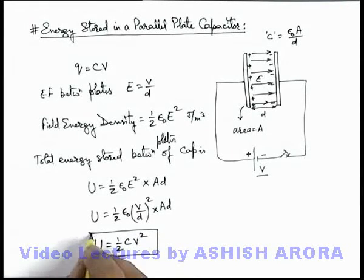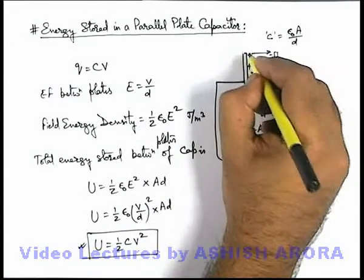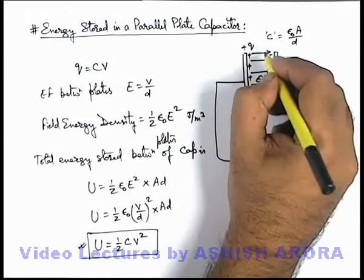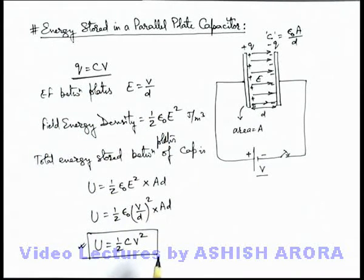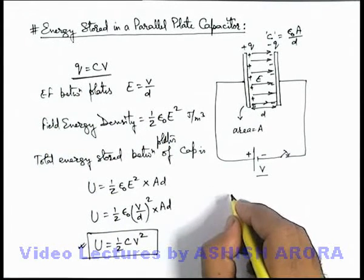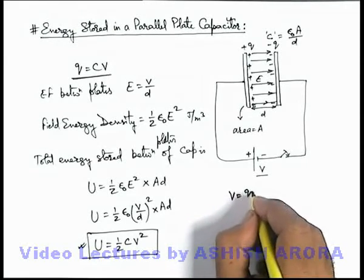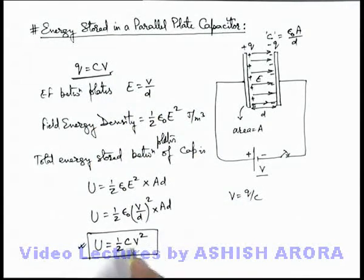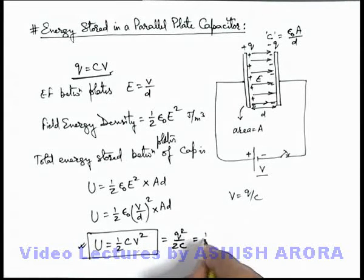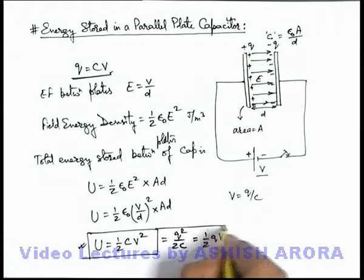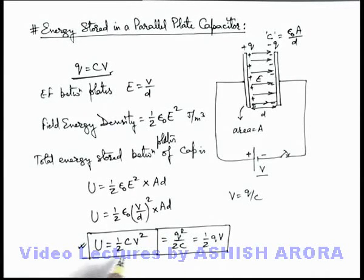This is quite an important term you should always keep in mind. We can also transform it in terms of charge. If charge on the plates are plus Q and minus Q, we know that final charge on the plates will be CV. So here we can write V is equal to Q by C from this expression. If you substitute, one C gets cancelled out and the relation can be written as Q squared by 2C, or if one CV can be written as Q it can also be written as half of QV. These are also the relations which are equally useful.